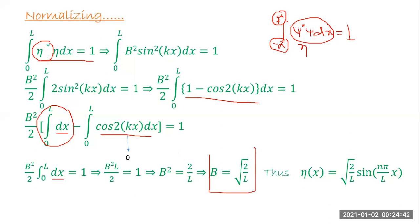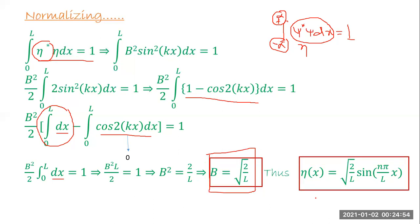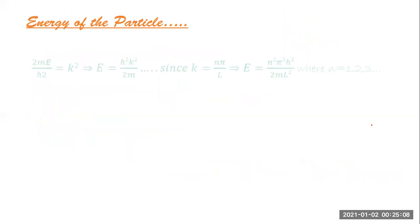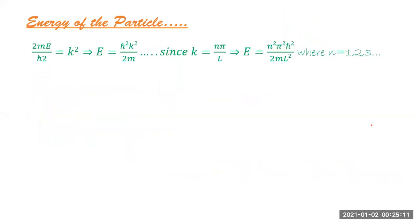Thus the final solution for the wave function of a particle in a one-dimensional infinite potential well is: η(x) = √(2/L) · sin(nπx/L).